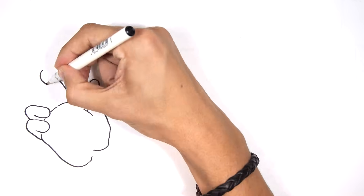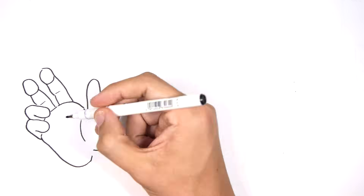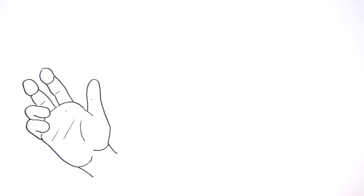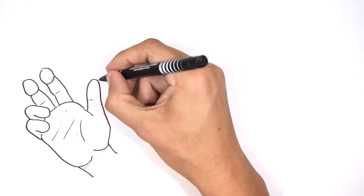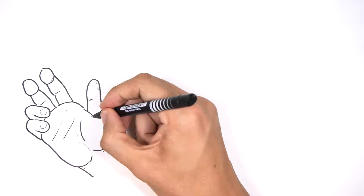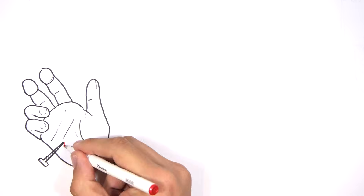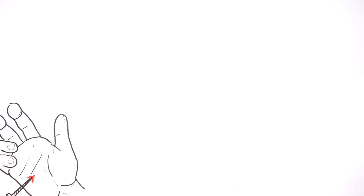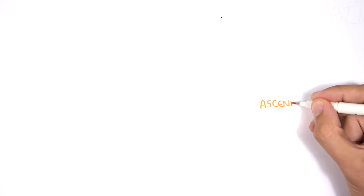Imagine you had a right hand injury — what happens and how do we feel pain? The pain signal coming from the site of injury will travel up to the brain, and this is where the perception of pain is felt. The signal going up to the brain is referred to as the ascending pathway.